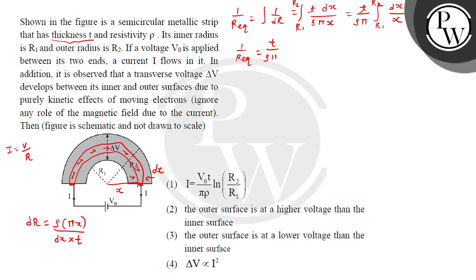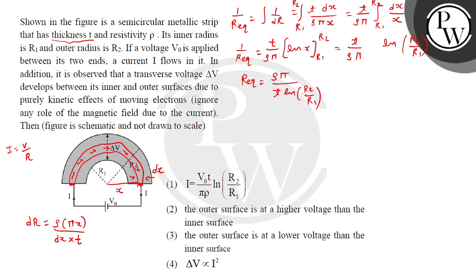Integrating t/(ρπ) times dx/x from r1 to r2 gives t/(ρπ) times ln(r2/r1). This equals 1/R_equivalent, so R_equivalent = ρπ / (t·ln(r2/r1)). Then the current I = V0 / R_equivalent = V0·t / (ρπ·ln(r2/r1)). This matches option number one.